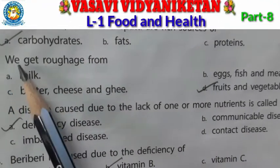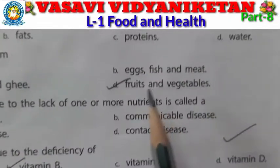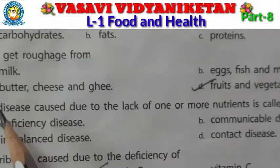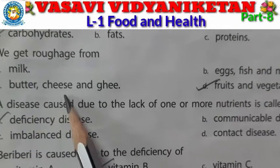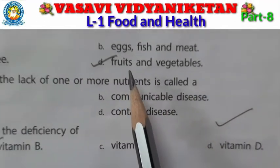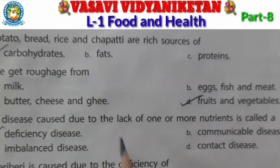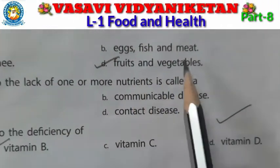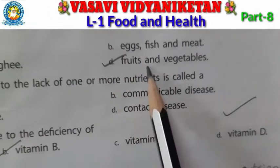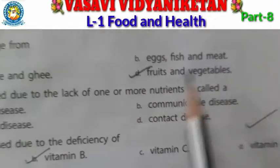Question 3: We get roughage from — milk, eggs, fish and meat; or butter, cheese and ghee; or fruits and vegetables? D is the correct answer: fruits and vegetables. Tick the D answer.